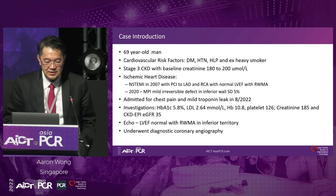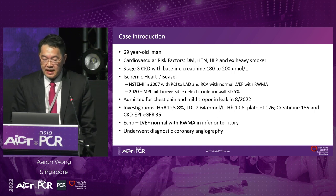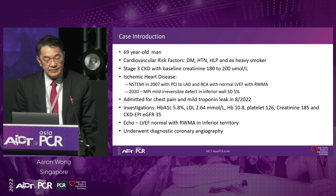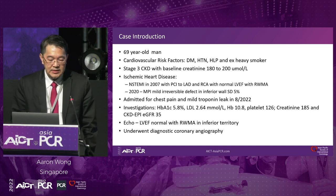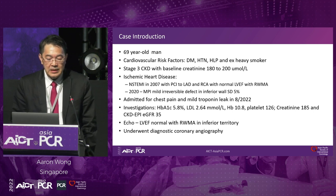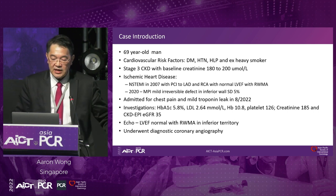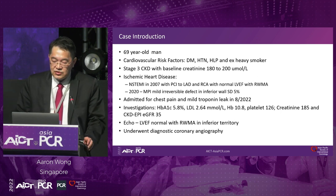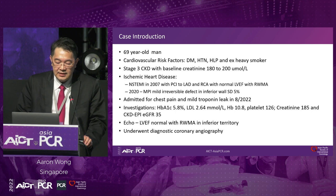This is the case introduction. A 69-year-old man with cardiovascular risk factors of diabetes, hypertension, hyperlipidemia, and ex-heavy smoker. He has stage 3 CKD with baseline creatinine of 180 to 200. He had a past history of ischemic heart disease, a non-STEMI about 15 years ago with PCI to the LAD and RCA, normal LVEF but regional wall motion abnormality in the LAD territory. In 2020, a nuclear perfusion scan showed a very mild irreversible defect in the inferior wall with stress defect of 5%.